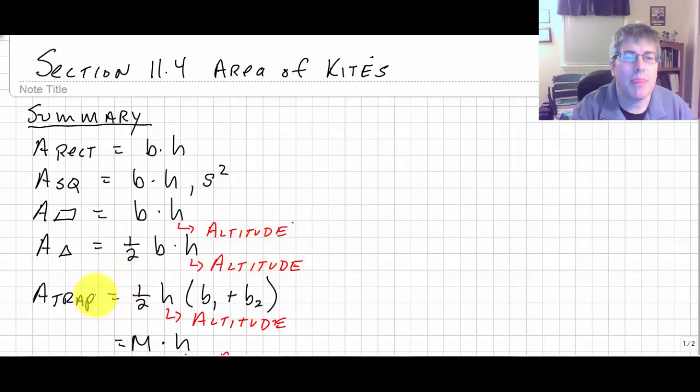The area of a trapezoid is one-half height times base one plus base two, where the height again is the altitude.